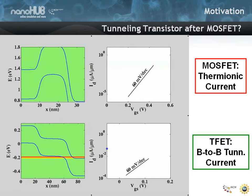In a MOSFET you are fundamentally limited to a slope of 60 mV per decade. You cannot turn off the transistor faster than that. But in a band to band tunneling device, you have a chance to turn it off faster because you have a valence band and a conduction band limiting the thermal excitation path of your carriers. So that fundamentally allows you to have a chance to have a steeper sub-threshold swing.